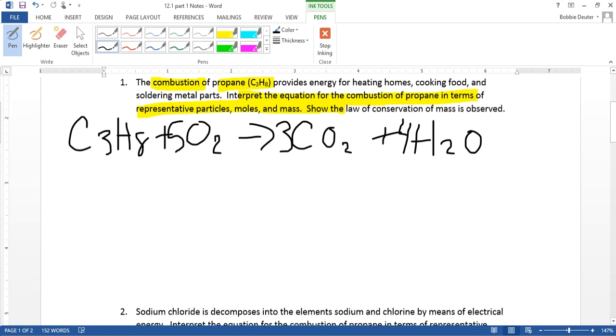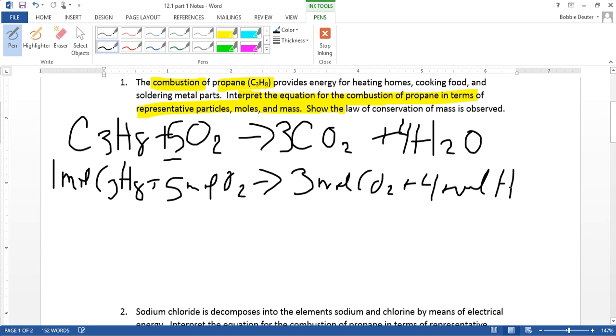So the first part, writing it in terms of representative particles and moles, that's the easy part. So let's do it in terms of moles. Looking here, we just use the coefficient that's in front of our compound, and that tells us how many moles we have. So we have one mole of propane, five moles of oxygen, three moles of CO2, and four moles of water.